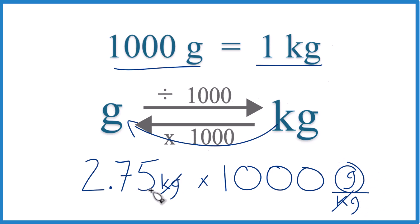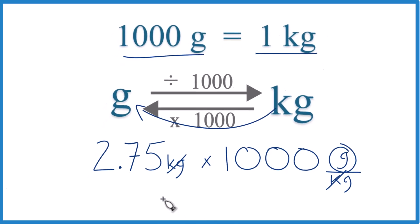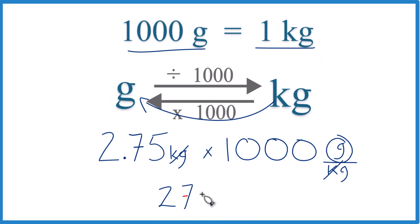So 2.75 times 1,000 grams, that's 2,750 grams. So in answer to our question, 2.75 kilograms equals 2,750 grams.